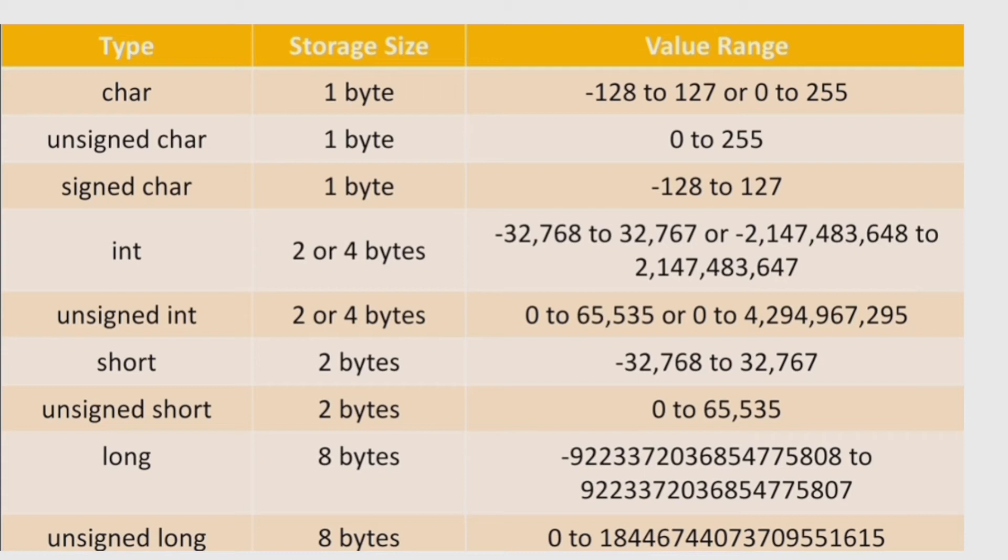Let's see a table which includes different types of qualifiers, their value range, and storage size. Consider character: it has a storage size of 1 byte, and the value ranges from 0 to 255. Unsigned character is 1 byte, ranging from 0 to 255. Signed character also has storage size of 1 byte, ranging from minus 128 to plus 127.